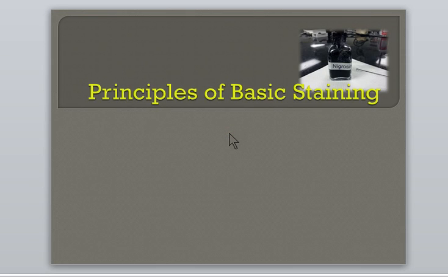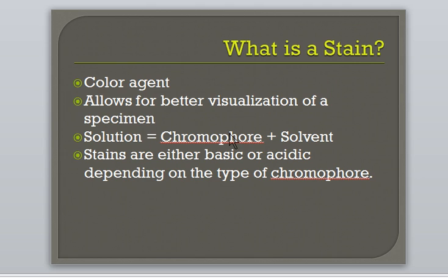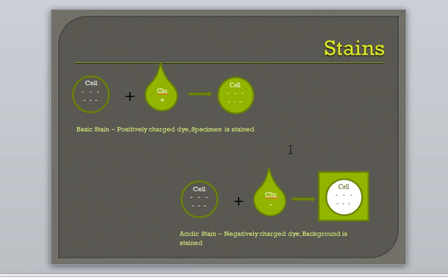Principles of Basic Staining. Staining enhances the contrast of a cell and helps one to better visualize the specimen and see various structures. A stain is a solution consisting of a color agent or dye known as a chromophore and a solvent, a solution in which the dye is dissolved. The color agent or chromophore in a stain is a charged ion, and the charge of the chromophore dictates the type of stain.